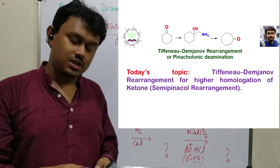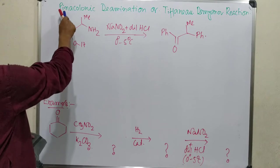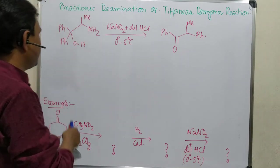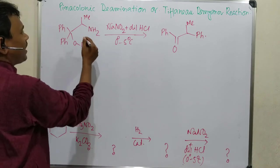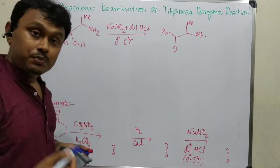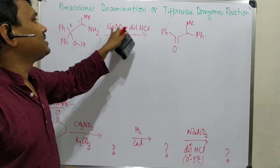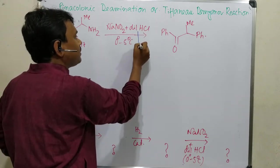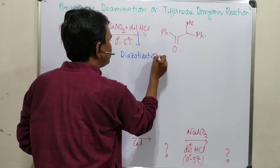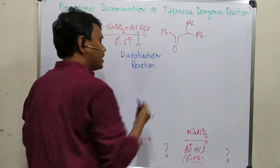This is a special type of reaction which I will explain today. From the name 'pinacol deamination,' you can see that the amine will leave because it is a deamination reaction. So here we have an amino alcohol — a 1,2-amino alcohol — and in the presence of sodium nitrite and dilute HCl, it produces a product. Before going further, you should know that NaNO₂ plus HCl produces a diazotization reagent.